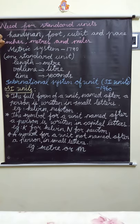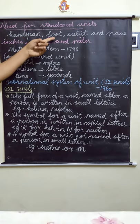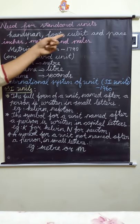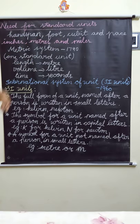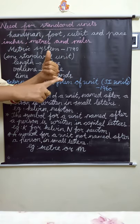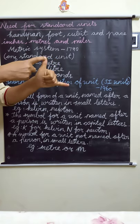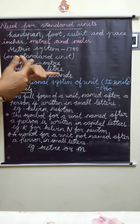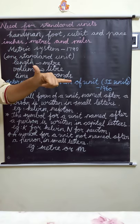Next topic is the need for standard units. People in ancient times used units such as handspan, foot, cubit and pace. Handspan means the distance from the little finger to the thumb. Cubit means the distance from the elbow to the fingers.